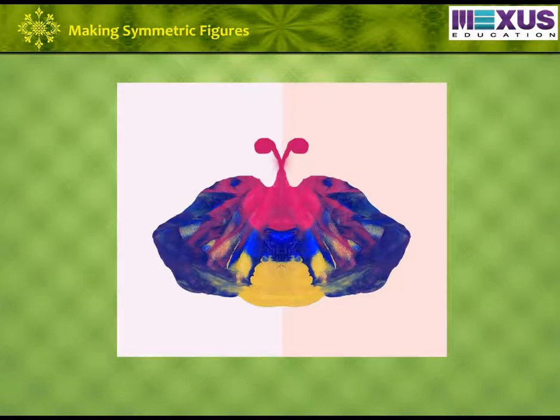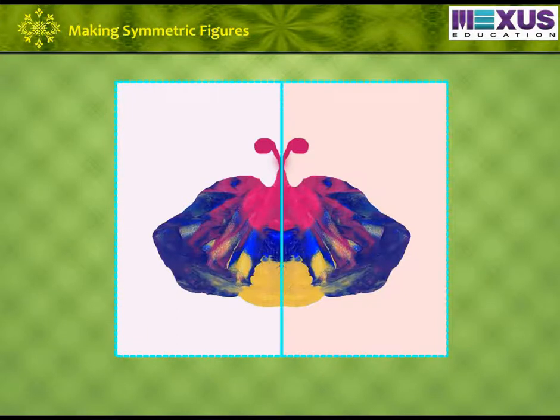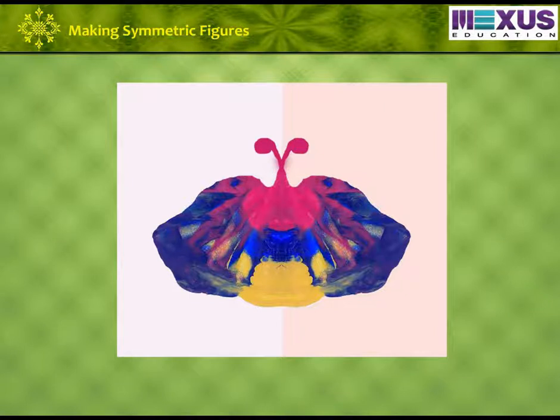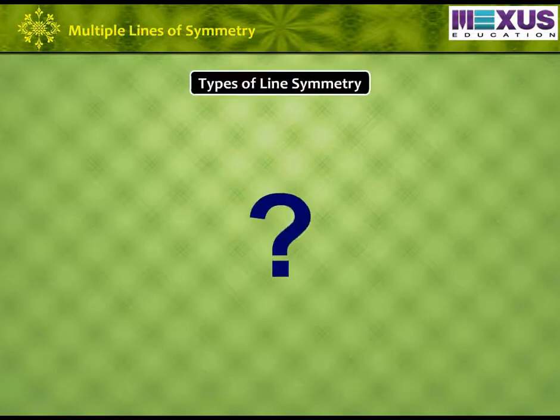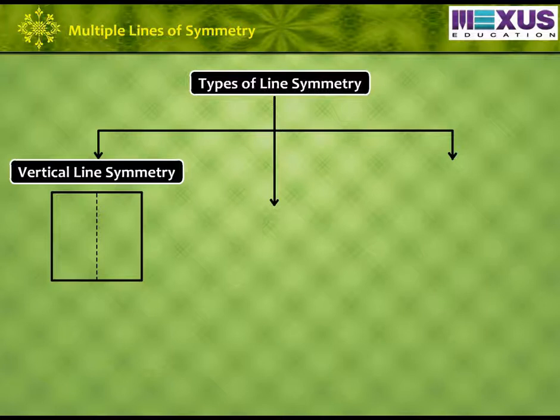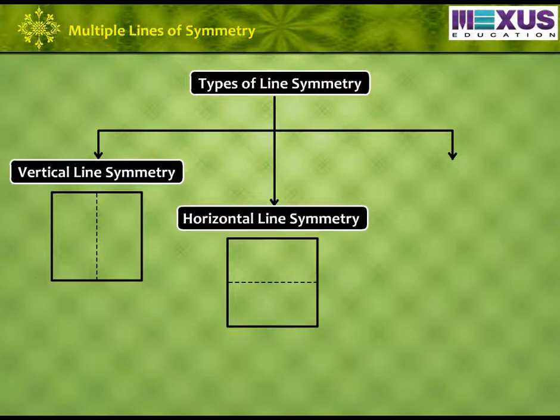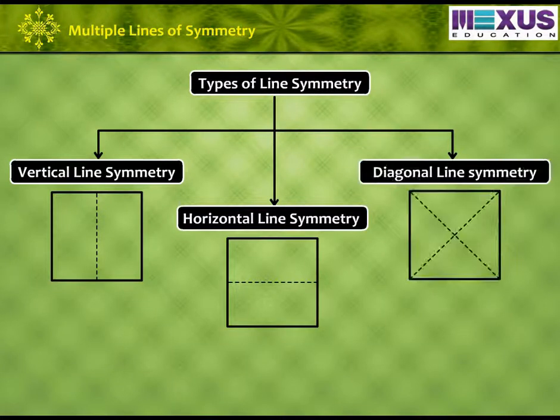We see that by folding the paper into half, we get the exact pattern of one half on the other half of the paper. In simple words, we can say that we got mirror images of each other. Do you know there are different types of line symmetry? Like vertical line symmetry, horizontal line symmetry or diagonal line of symmetry.